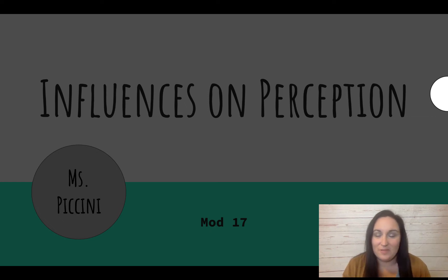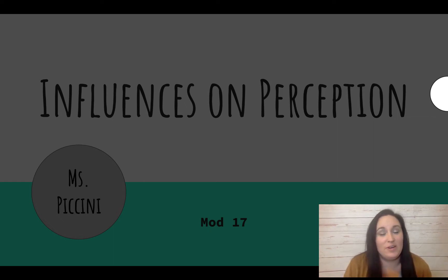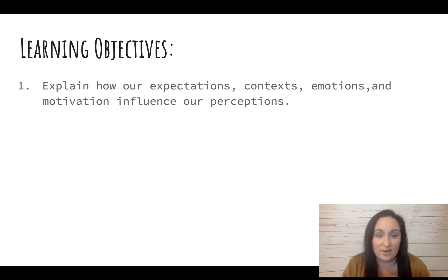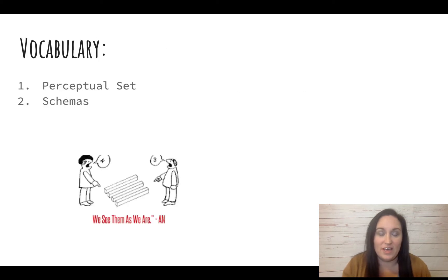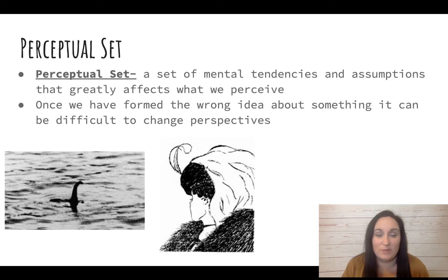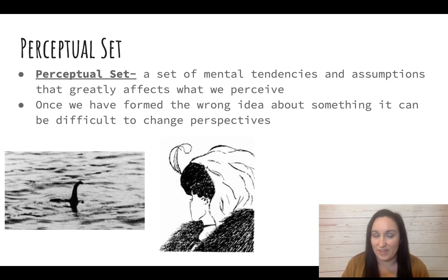Hi everyone and welcome to unit 4 mod 17. We are talking about influences on perception today. Let's start with perceptual set — a set of mental tendencies or assumptions that influences how we perceive things.